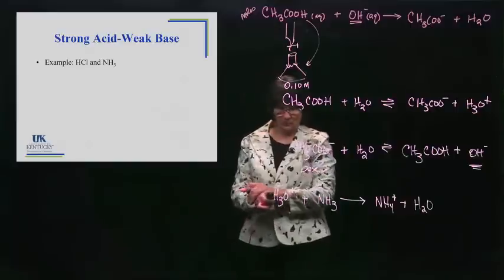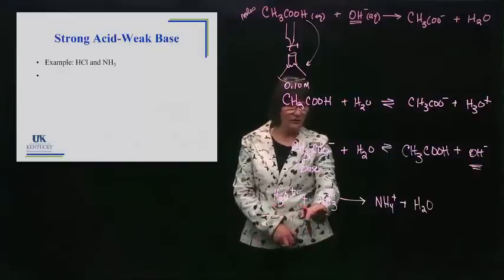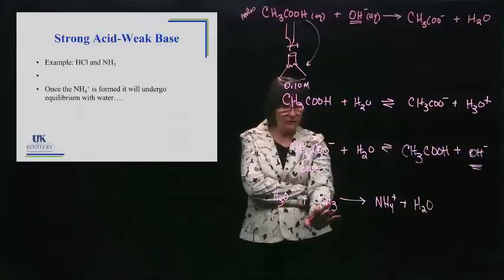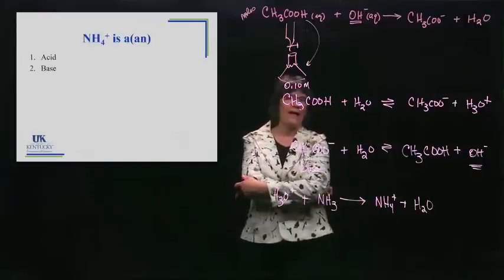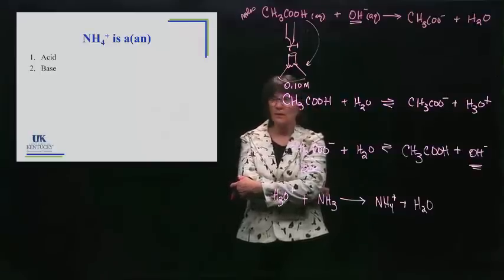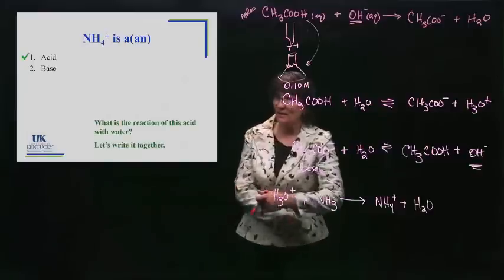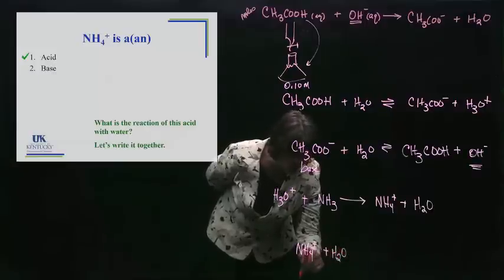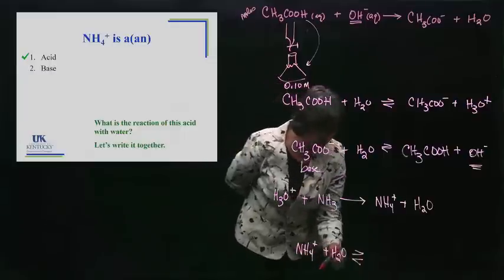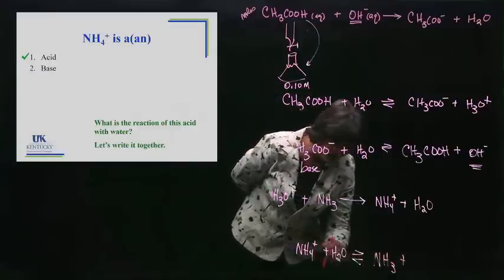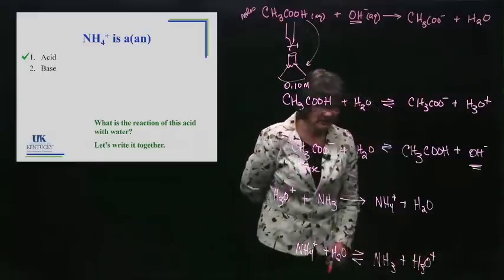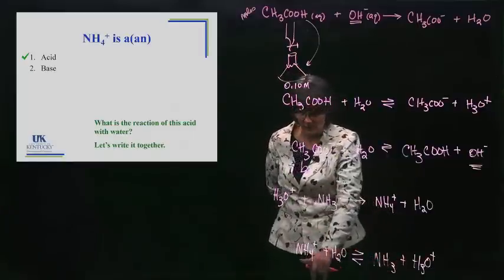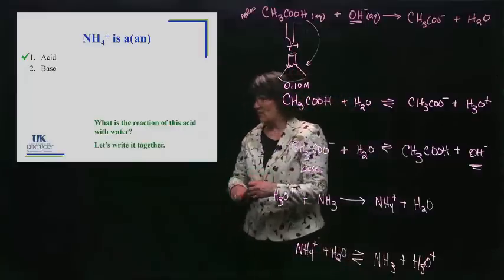Once we have that reaction, if we're at the equivalence point, we've formed NH₄⁺. What is that? It's an acid — a proton donor. As an acid, it's going to have this reaction take place: the acid sits in water and undergoes equilibrium where it donates to the water, making ammonia, while the water accepts that proton and becomes H₃O⁺. So that reaction takes place in water. Let's imagine the graph for this scenario.